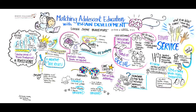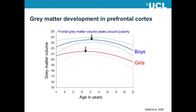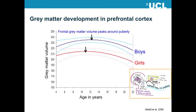We can measure things like grey matter and white matter, and also how the brain changes in function. This is a graph showing the volume of grey matter on the vertical axis plotted against age in years from 4 to 22. You can see that in both boys in blue and girls in red, grey matter volume increases during childhood. It peaks — as the arrows point to — a little bit earlier in girls than in boys, which probably corresponds to the slight difference in average age of puberty onset between the sexes.